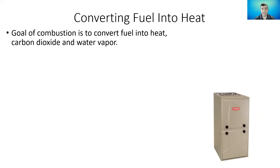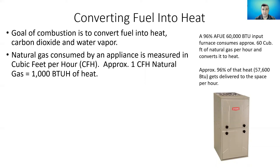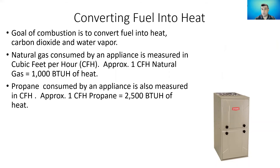Our goal is to convert fuel into heat. Natural gas is one of the fuels that's burned. In this example, we're burning natural gas in this Bryant furnace. Natural gas is measured in cubic feet per hour. About one cubic foot per hour of natural gas equals about 1,000 BTUs per hour of heat. So this Bryant furnace — let's say it's a 60,000 BTU input — consuming around 60 cubic feet of gas per hour of runtime. Because it's 96% efficient, we get 57,600 BTUs of heat. But if instead of natural gas we were delivering propane to this furnace, propane gives us a lot more heat per cubic foot — one cubic foot per hour of propane gives us about 2,500 BTUs per hour of heat.